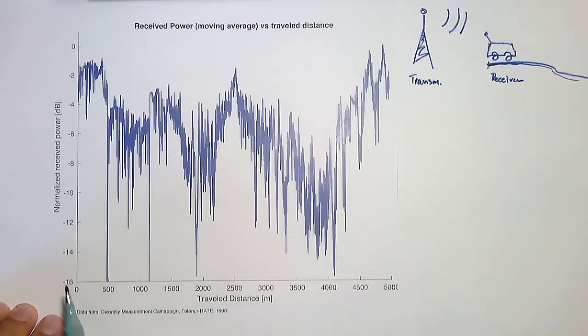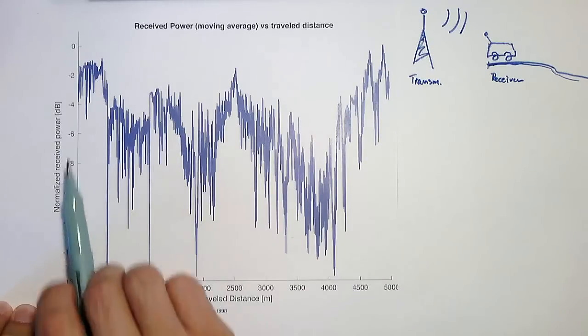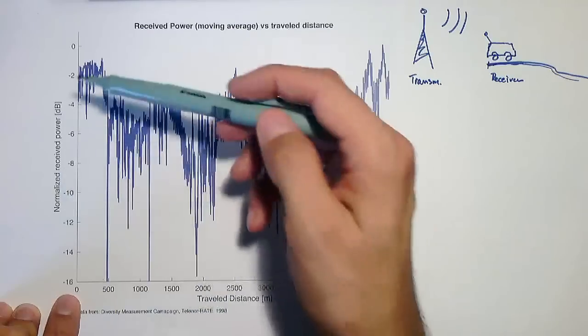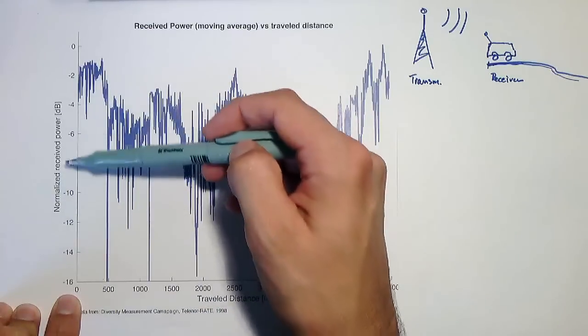And the signal power was recorded as a function of the travel distance along the highway. And this is the result we get. The signal fluctuates along the travel distance.